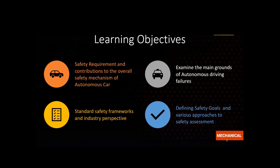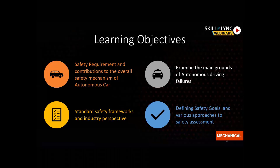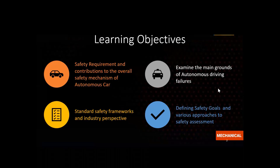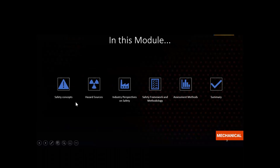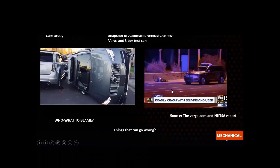Let's first have a look at the learning objectives for today. First is safety requirements — on what basis do we consider something as really safe and what is its overall contribution to the industry. We will also be examining the main factors of autonomous driving failures, some standard frameworks from the industry perspective, and we'll be defining safety goals, item descriptions, and various approaches for safety assessment methods and validation of the safety of autonomous cars.